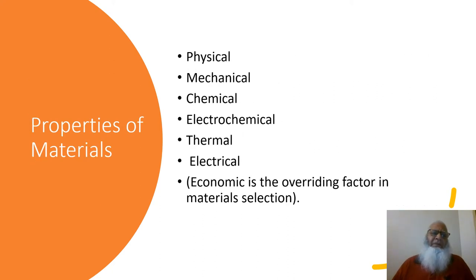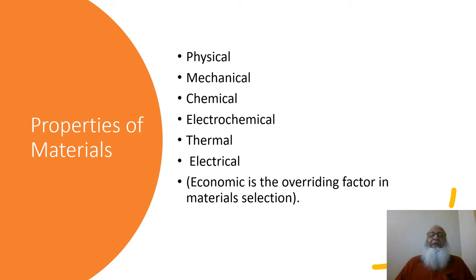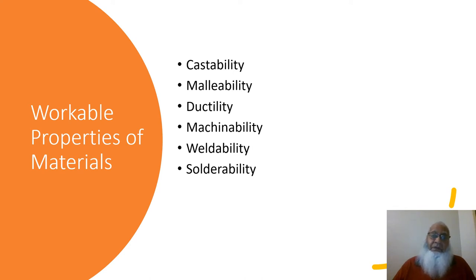This slide shows the properties of materials that the corrosion engineer has to deal with in their professional career — physical, mechanical, chemical, electrochemical, and thermoelectrical properties. In material selection, the overriding factor is economics, which the corrosion engineer needs to understand. Another important factor is the workable properties of materials, such as castability, malleability, ductility, machinability, weldability, and solderability.